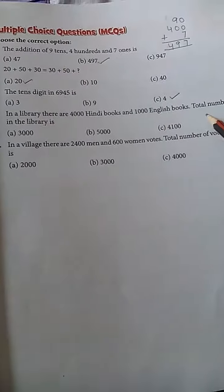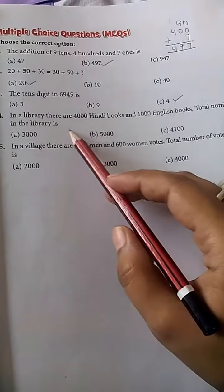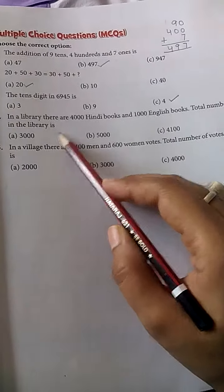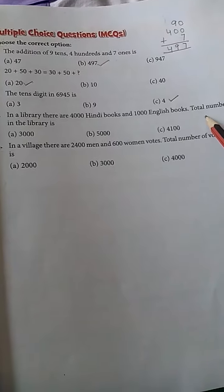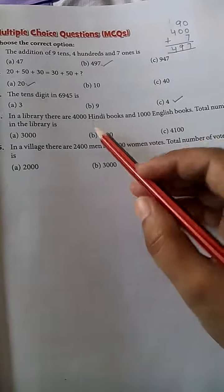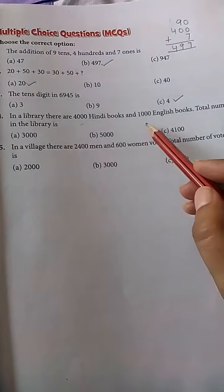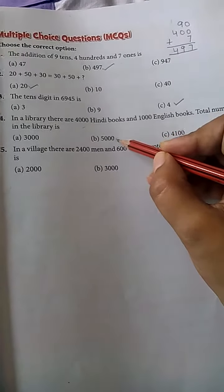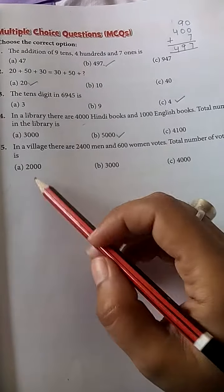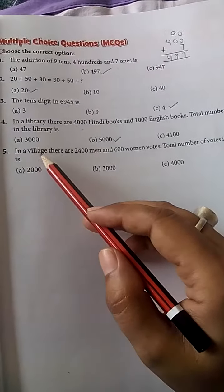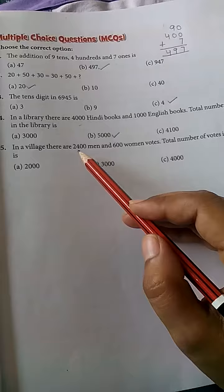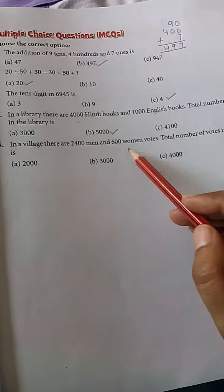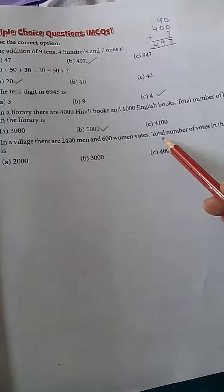and 1,000 English books. Total number of books in the library is—whenever we see 'total number,' we add. Total number of books will be 4,000 + 1,000. The answer is B: 5,000. Problem 5: In a village there are 2,400 men and 600 women voters. Total